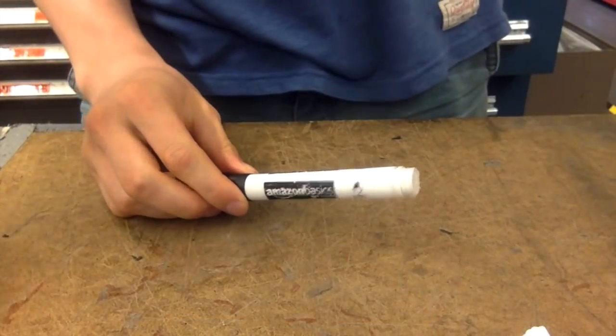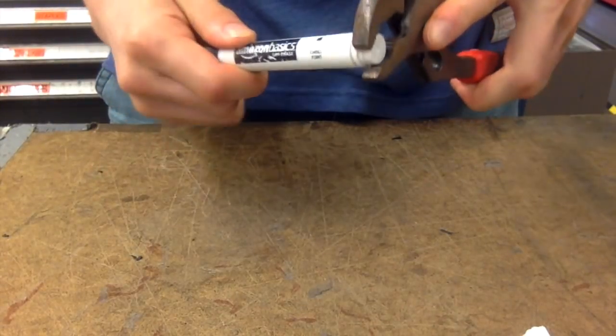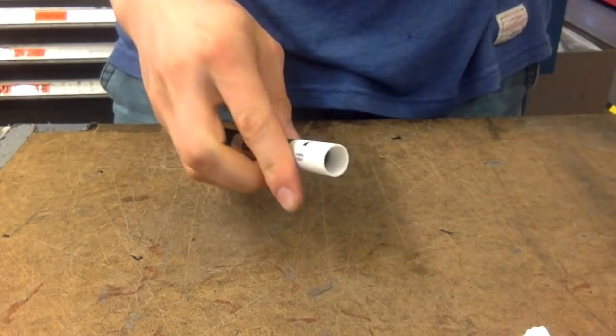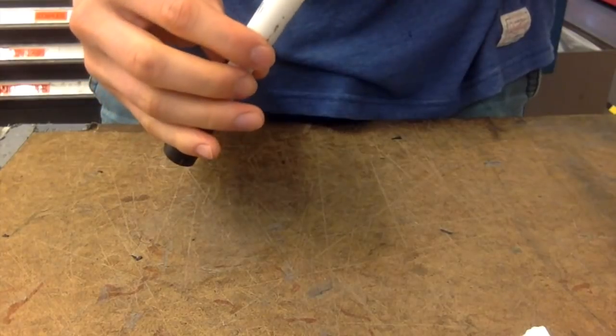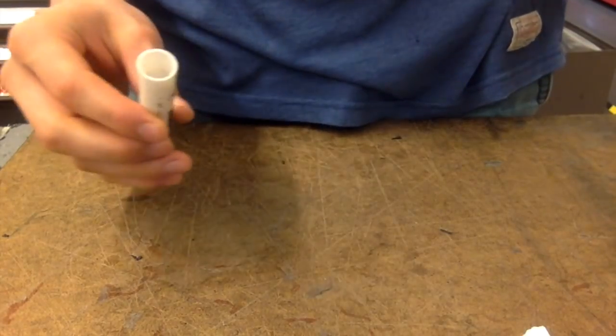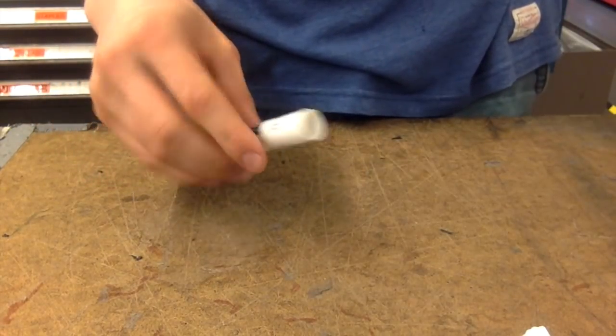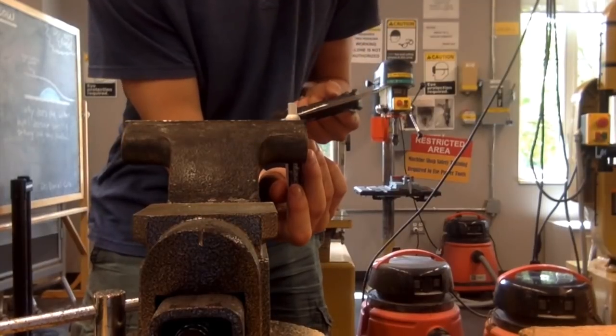So to get started, we need something to hold the shape of the solenoid. You could easily use something like a piece of PVC pipe, but I'm using a dead marker that I had lying around. Using a wrench and some needle nose pliers, I took out the spent ink cartridge and then sawed off the nose of the marker.